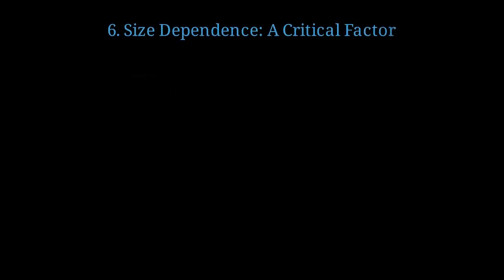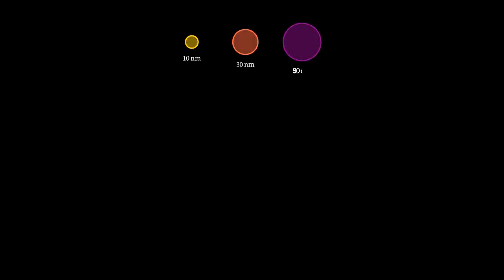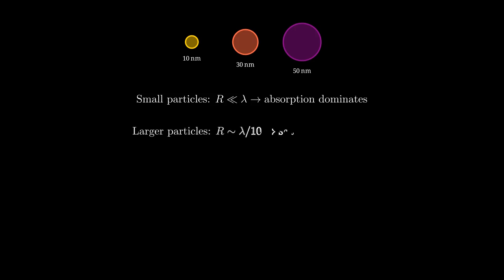One of the most important aspects is how the resonance changes with particle size. As particle size increases from 10 to 50 nanometers, the color shifts dramatically. Smaller particles appear more reddish, larger ones more purple. This is due to the changing balance between absorption and scattering. For small particles, where radius is much less than wavelength, absorption dominates. For larger particles, where radius approaches wavelength divided by 10, scattering becomes increasingly important and the peak shifts to longer wavelengths.